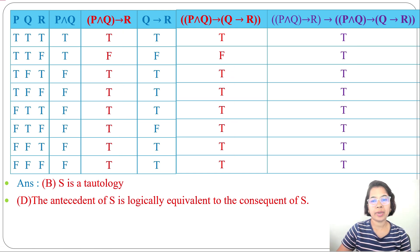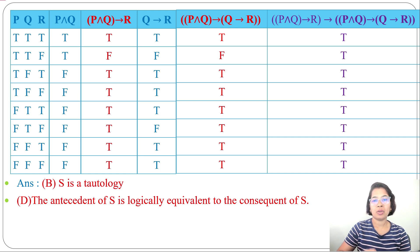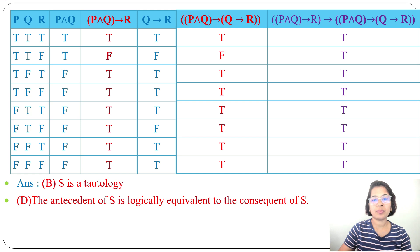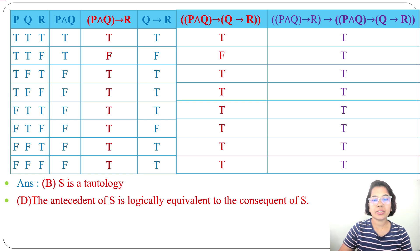You can solve it either way — create the truth table or simplify it using existing logical equivalences without the truth table. I already discussed how you can prove two compound propositions are logically equivalent without using the truth table, so just go through the lecture. If this lecture is helpful, please like, share, and subscribe. Thank you.